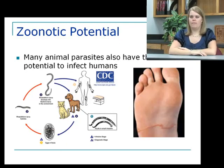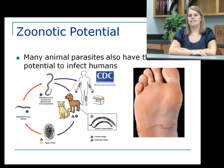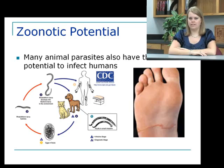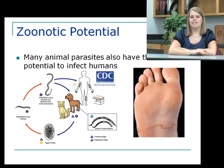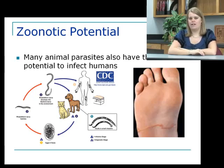One thing we really worry about as veterinarians is zoonotic potential. Many animal parasites can also infect humans. This slide shows the life cycle of the hookworm, which is commonly found in dogs and cats. It lives in their gastrointestinal tract and they pass eggs in their feces, which get into the soil where larvae develop. These larvae infect humans by crawling through your skin when you walk barefoot or play in a sandbox. The worms can penetrate your skin, causing a tract migration visible on the foot, and can also migrate to the eye and cause blindness.